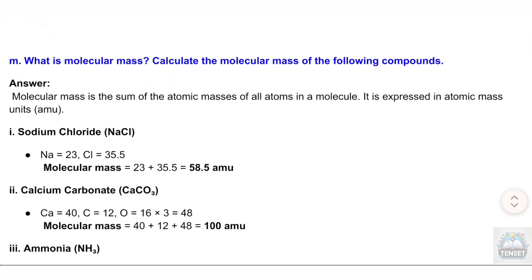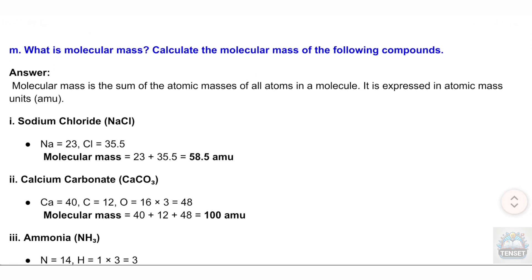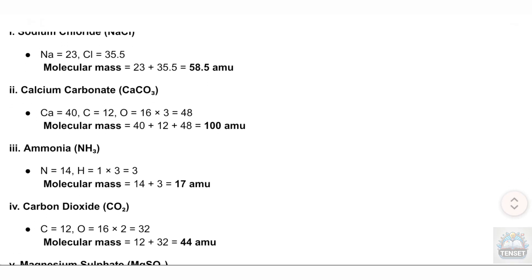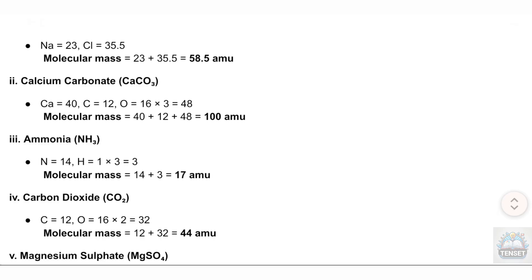M. What is molecular mass? Calculate the molecular mass of the following compounds. Answer: Molecular mass is the sum of the atomic masses of all atoms in a molecule, expressed in atomic mass units (a.m.u.). I. Sodium chloride (NaCl): Na = 23, Cl = 35.5. Molecular mass = 23 + 35.5 = 58.5 a.m.u.